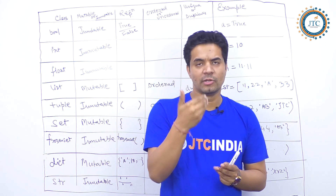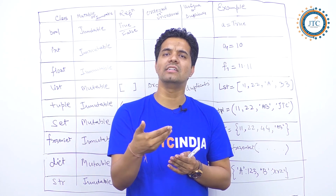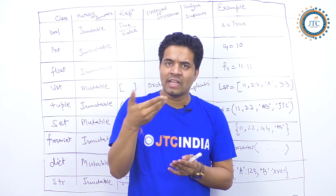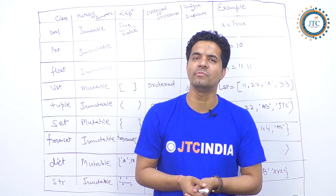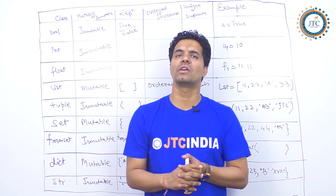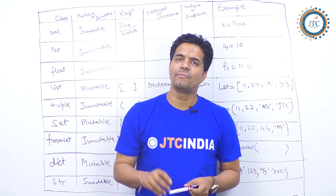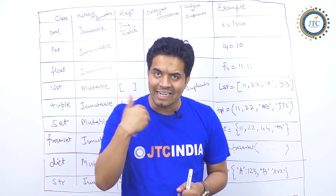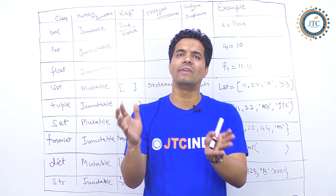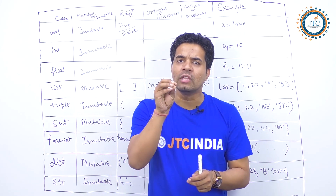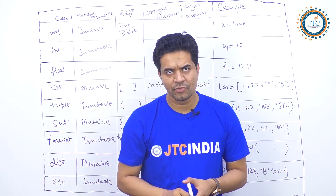First is mutable. Mutable means if you have created one data type and assigned some values in it, modifications are possible — we can do some changes. That is what we call mutable. Immutable means if you have created a data type and assigned values, you cannot perform any changes — that is called immutable.